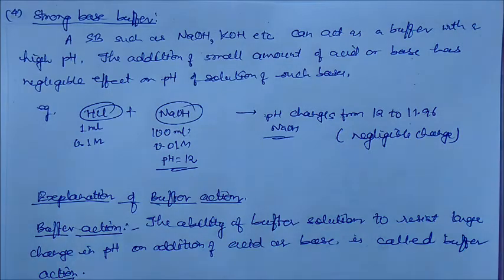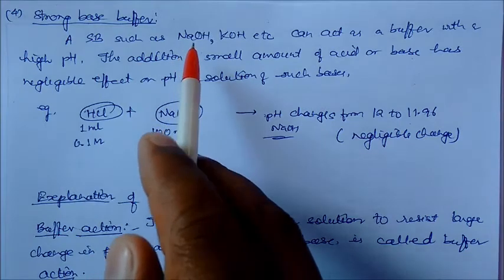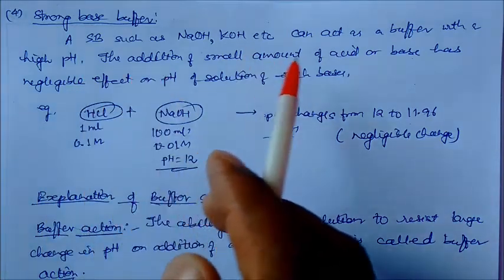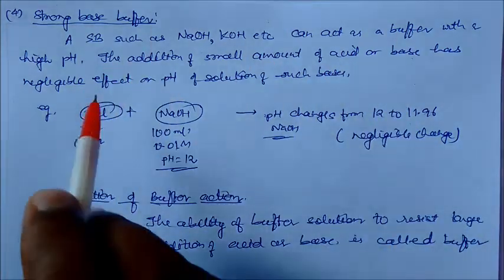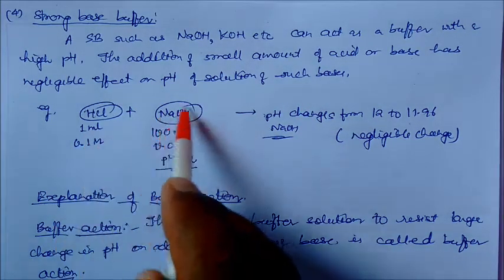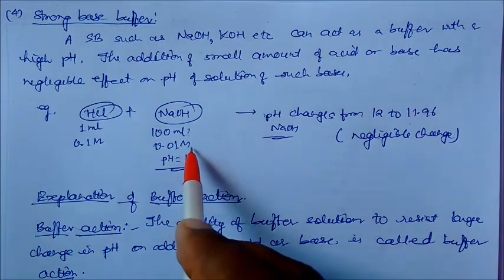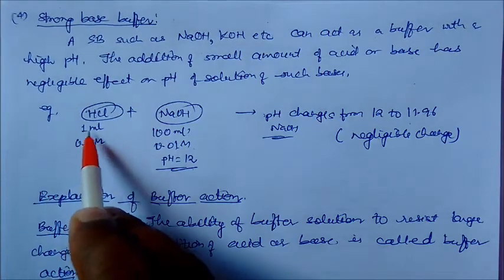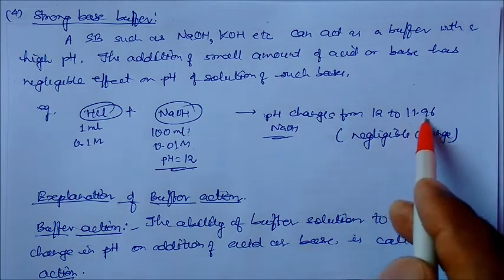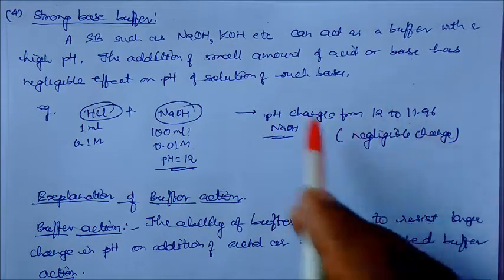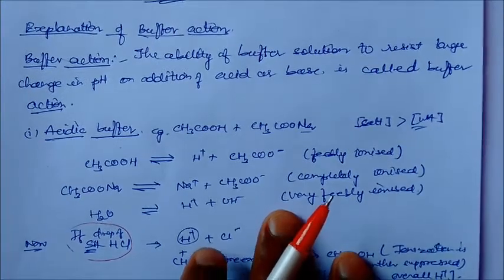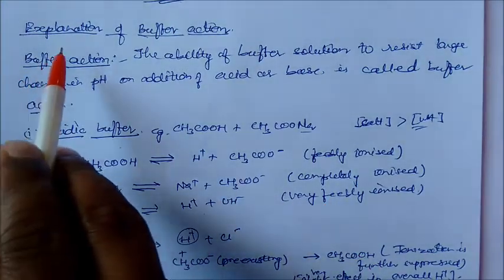The next buffer is the strong base buffer. Strong bases such as sodium hydroxide and potassium hydroxide also act as buffers at high pH. The addition of a small amount of acid or base has negligible effect on pH. For example, 100 ml of 0.01 M sodium hydroxide has pH 12. On adding 0.1 M HCl (1 ml) into it, the pH changes only from 12 to 11.96 — a negligible change. This is the action of the strong base buffer.